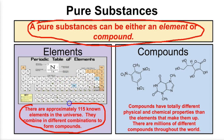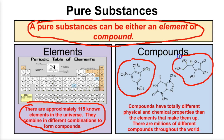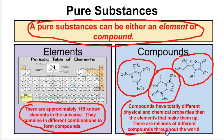If you're a compound, you're also going to be a pure substance — that's two or more different elements chemically bonded together. Most of the pure substances around us exist as compounds. There are millions of compounds but only about 115 elements. And one thing we talked about in an earlier video is that compounds are going to have totally different physical and chemical properties than the elements that make them up.